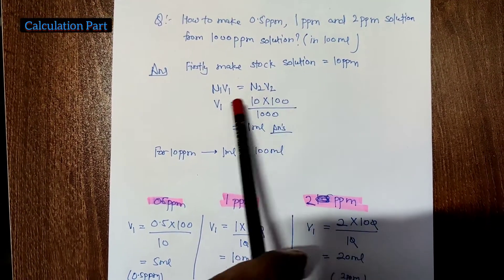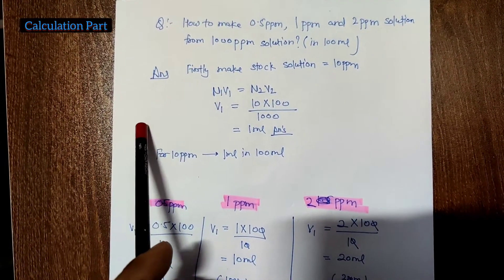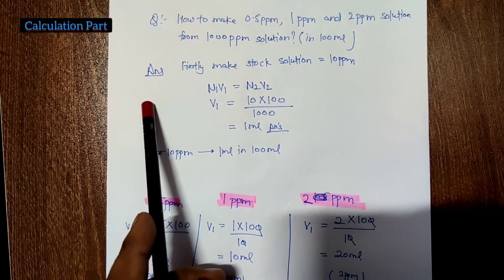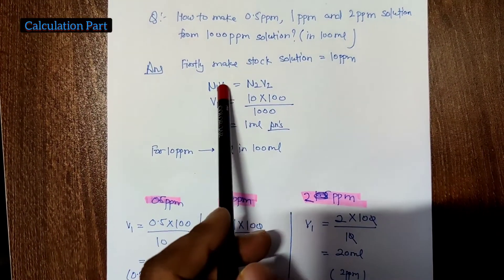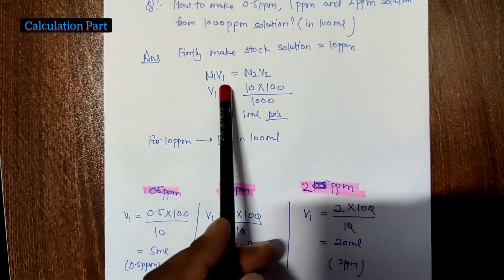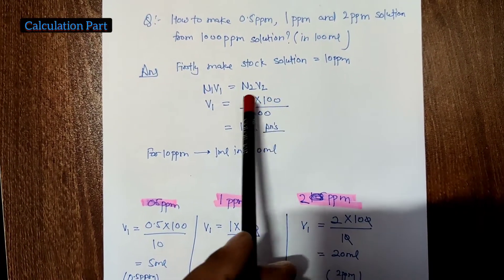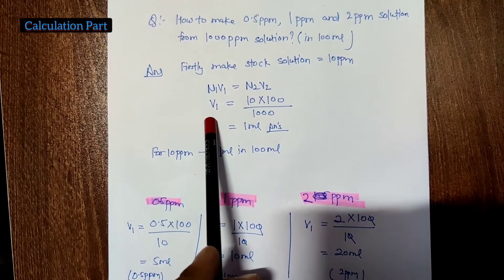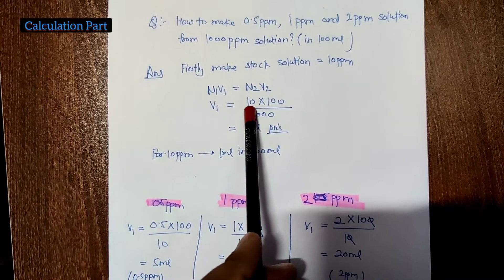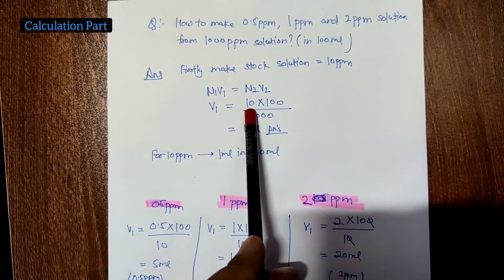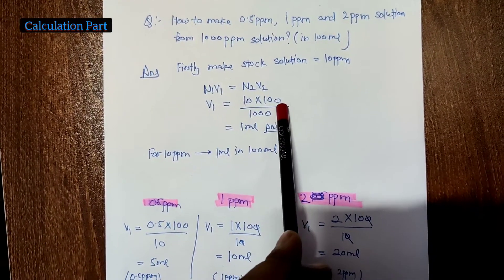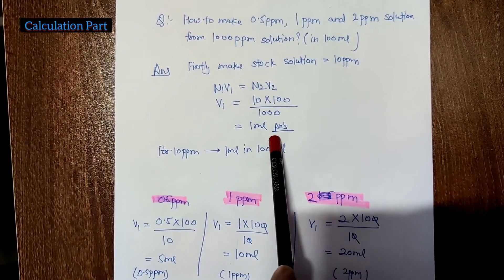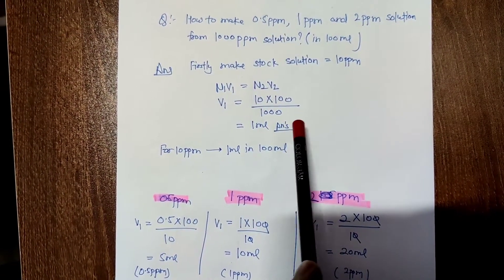First, our aim is to prepare a 10 ppm stock solution. We use the formula C1V1 = C2V2. So N2 is 10 ppm, the makeup volume is 100 ml, divided by 1000 ppm, giving us a value of 1 ml. So we need 1 ml in 100 ml solution for preparing the 10 ppm stock solution.